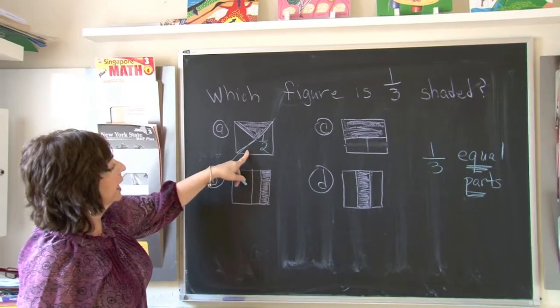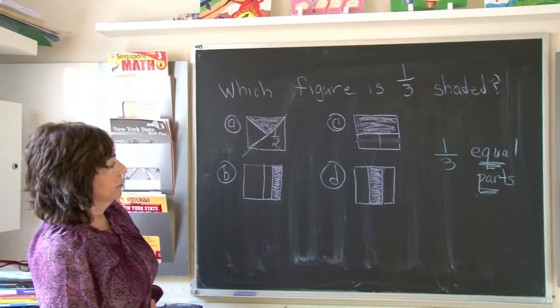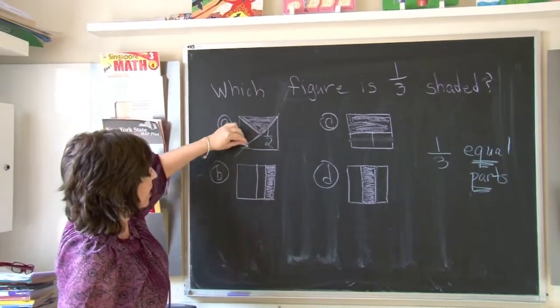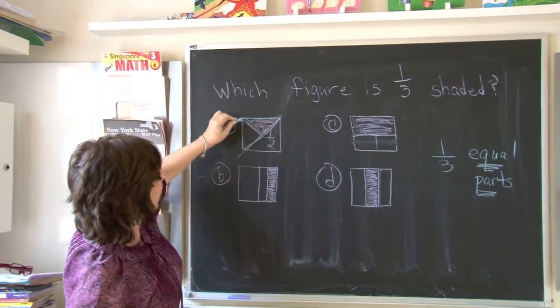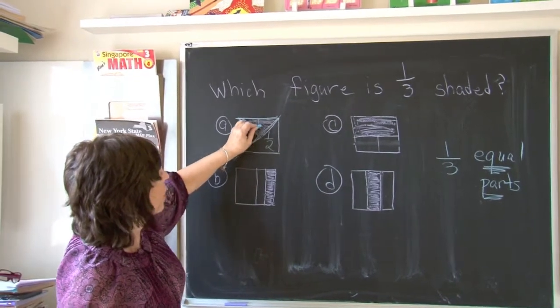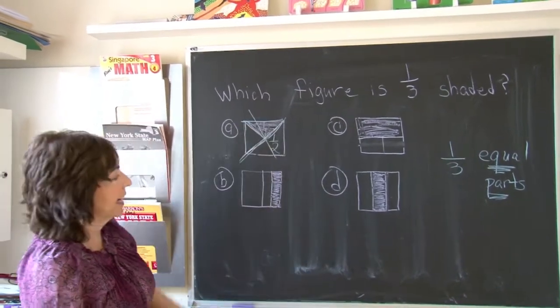So if this is one-half, this is not an equal one-third, because this is a half as well. And when I break one-half in half, I'm really getting one-fourth. So that is not the answer.